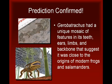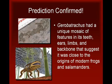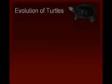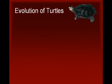Gerobatrachus is an intermediate form that fits neatly into the gap between frogs and salamanders. This intermediate form exhibits a unique mosaic of features in its teeth, ears, limbs, and backbone that all suggest it was close to the origin of modern frogs and salamanders.